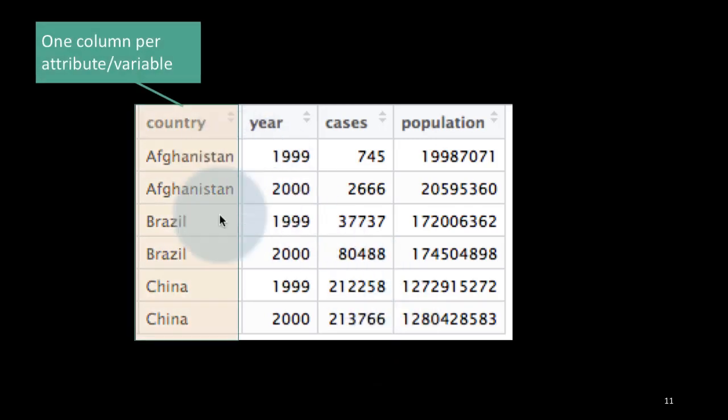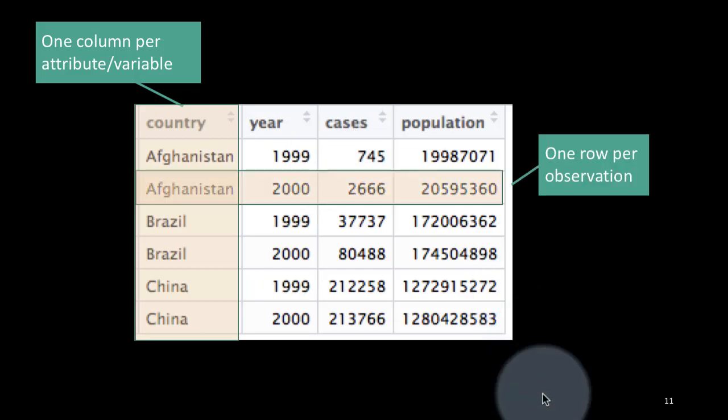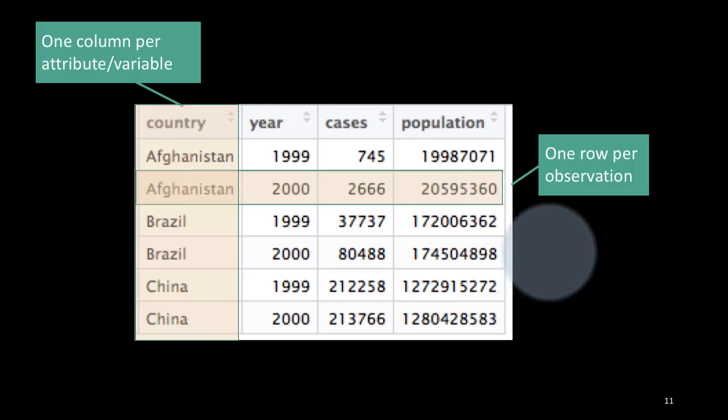So in this first data frame that we had, you've got one column per attribute or variable. So country is an attribute, year is an attribute, cases, etc. So you want to have one column per attribute.